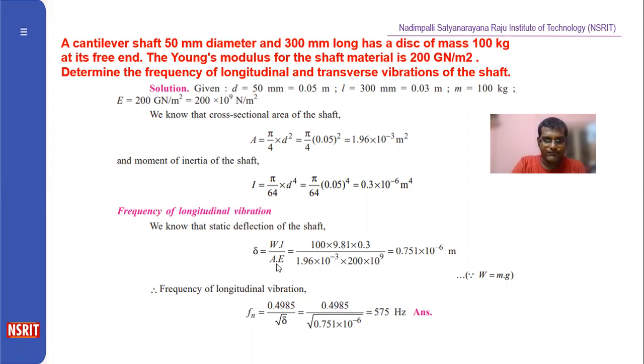Longitudinal vibration. The formula is fn equals 0.4985 divided by root delta. Delta is the deflection. So for cantilever, the formula is WL/AE. Here the load formula is equal to mg.